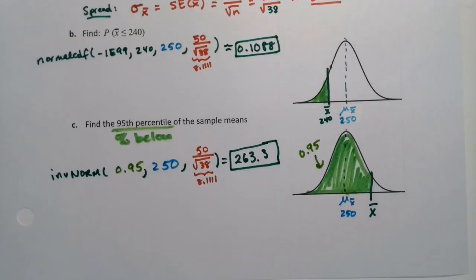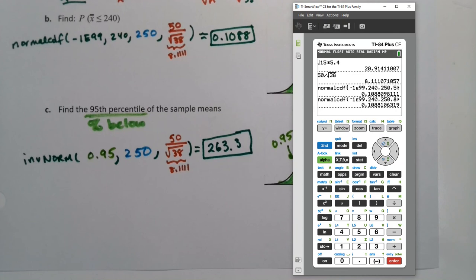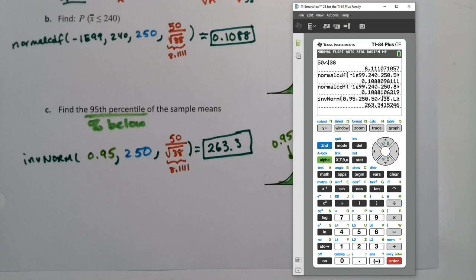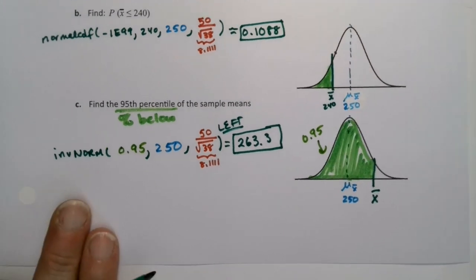What about the calculator? Inverse norm has some options. So you'll want to be careful. This is a left one. If you're going second distribution, inverse norm, if you have the new calculator, you have the option. But you want to use the same option as the old calculator, which is left. So it's 50 divide square root 38. And we want left. If you have an old calculator, you automatically are left. If you have a new calculator, you can write the word left next to this. And sure enough, you get the same answer that StatCrunch provided, which is 263.3.